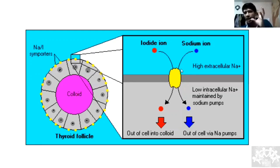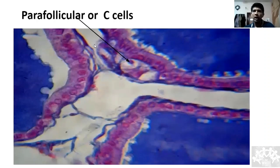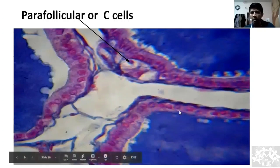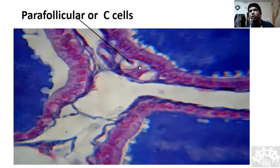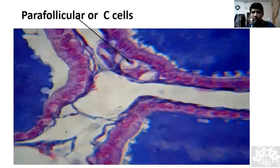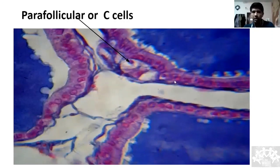The sodium-iodide symporter is peculiar to follicular cells, not to other cells. In the perifollicular space you have lymphoid cells and blood vessels, and importantly the parafollicular cells or C cells. These C cells do not have the sodium-iodide symporter — instead they secrete calcitonin, which decreases blood calcium by increasing calcium excretion in urine and inhibiting bone resorption. Parafollicular cells cannot take up iodine.